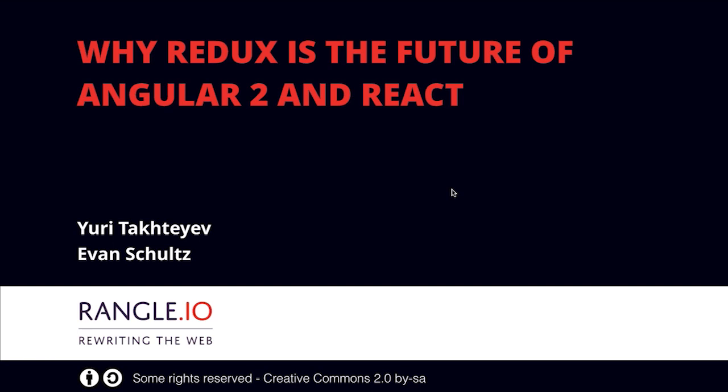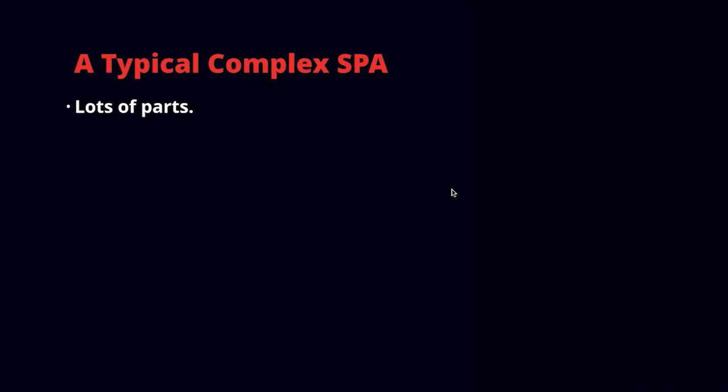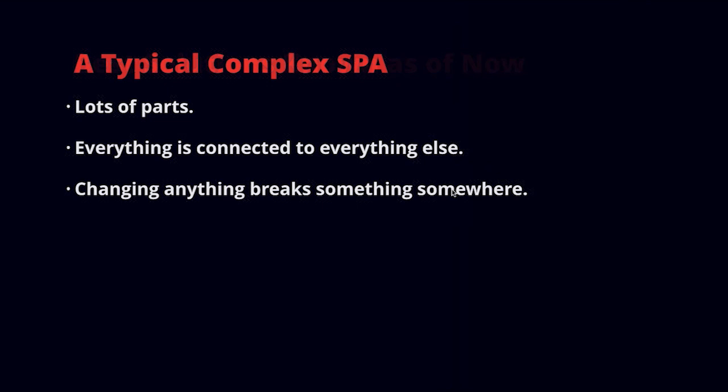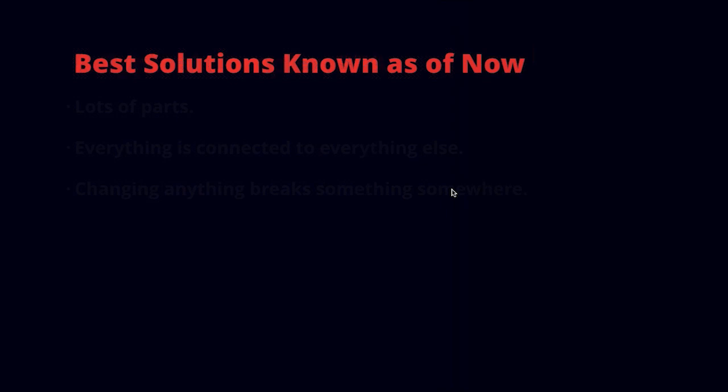First, what's the problem we're looking to solve? Think about a typical complex single-page application. Usually you have lots of parts — it starts simple and easy, but as you add more features, you get more parts and eventually everything is connected to everything else. That means changing anything breaks something somewhere. It becomes very difficult to add new features because every time you make a change, something breaks and it takes a lot of time to fix.